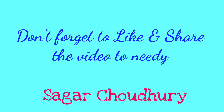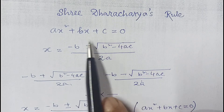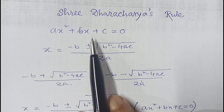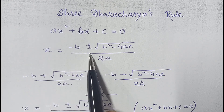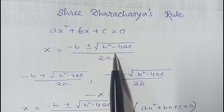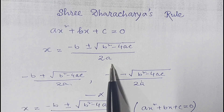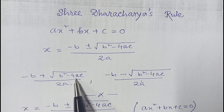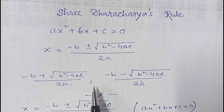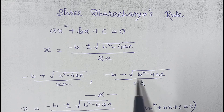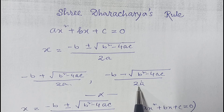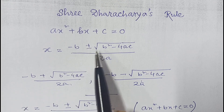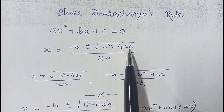According to Sridhar Acharya's rule, suppose we have an equation ax² + bx + c = 0. In that case, x will be: minus b plus or minus root over (b² - 4ac), divided by 2a. So the roots of the equation will be (−b + √(b²−4ac)) / 2a and (−b − √(b²−4ac)) / 2a. Combining these two, we write x = (−b ± √(b²−4ac)) / 2a.